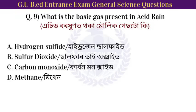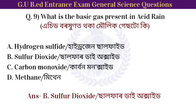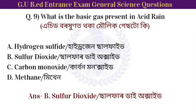Next question: what is the basic gas present in acid rain? Option: sulfur dioxide. The basic gas present in acid rain is sulfur dioxide.